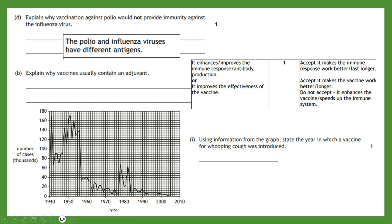The final question presents a graph showing the number of cases of whooping cough over several decades, asking you to use the graph to state the year in which a vaccine was introduced. After a vaccine is introduced, disease rates should plummet from their peak. In this case, either 1955 or 1956 would be accepted, as from around the mid-50s cases dropped dramatically. We would still expect some variation over the years, but generally disease rates become much lower after a vaccine is introduced.